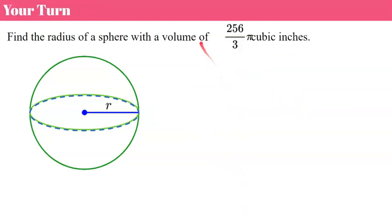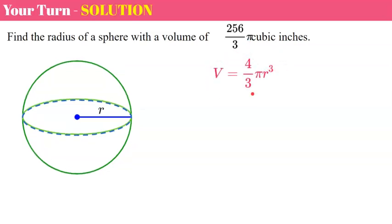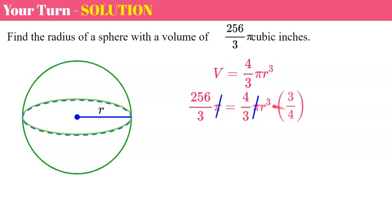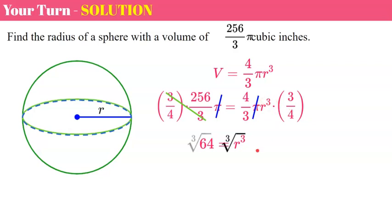Now it's your turn — find the radius of a sphere with a volume of 256π/3. Pause and come back. Welcome back. We put in our volume, divide both sides by pi, then multiply both sides by the reciprocal of four-thirds, which is three-fourths. Three divided by three is one; 256 divided by four is 64; four-thirds times three-fourths is one, leaving r cubed. Taking the cube root of both sides, our radius equals four inches.